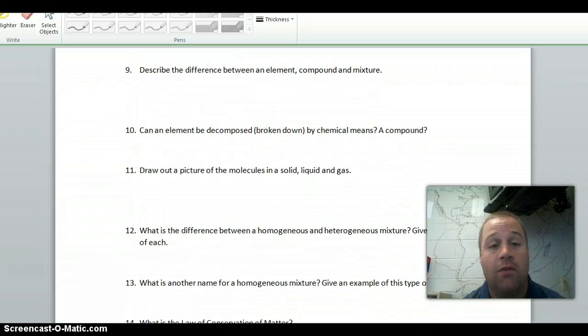As we go down here to number nine, describe the difference between element, compound, and mixture. An element is all one type of atom. A compound is two or more types of atoms, chemically combined. And a mixture is two or more substances that are blended together, not chemically combined. Can an element be decomposed by chemical means? No, you cannot break down an element any further than it is. Can a compound? Yes, you can break a compound down by chemical means.